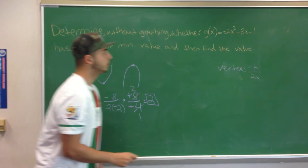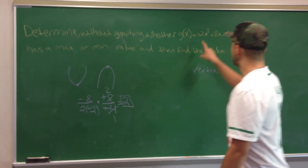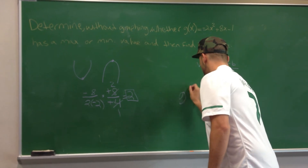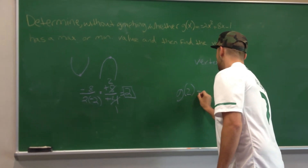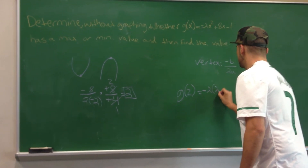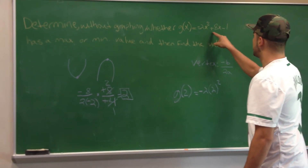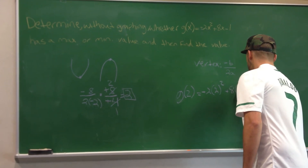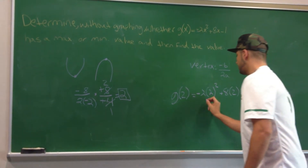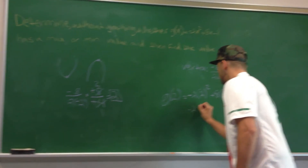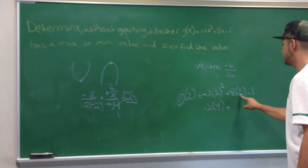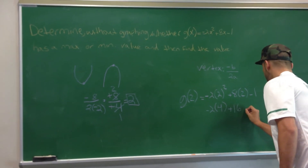We then need to plug 2 into the original problem, which would make it g of 2 equals negative 2 times 2 squared plus 8 times 2 minus 1. Which would make this negative 2 times 4, plus 8 times 2 is 16, minus 1.